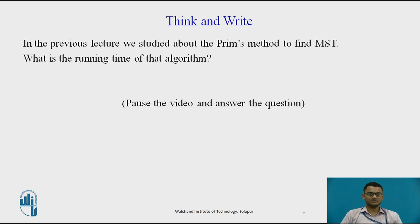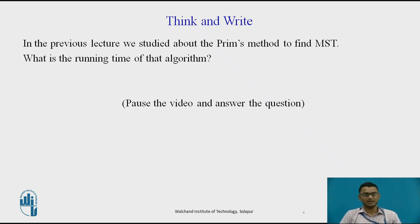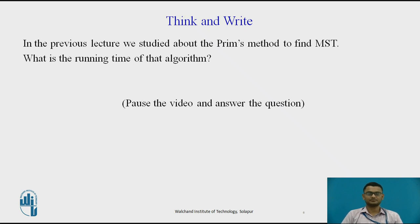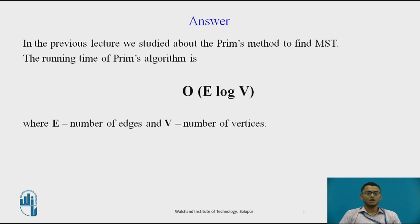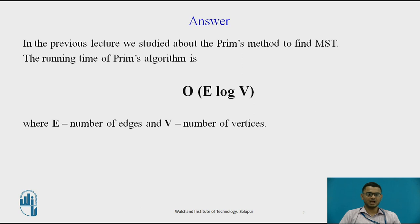Reflect on this question: in the previous lecture on Prim's algorithm, we studied the Prim's method to find the minimum spanning tree. According to that lecture, what is the running time of that algorithm? Pause the video and answer. The running time of Prim's algorithm to find a minimum spanning tree is O(E log V), where E stands for the number of edges and V stands for the number of vertices.